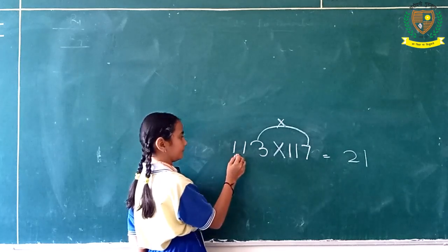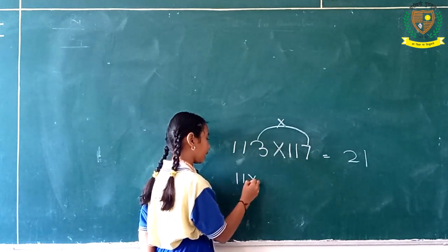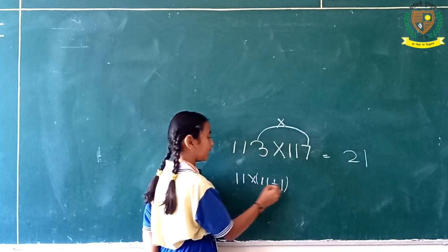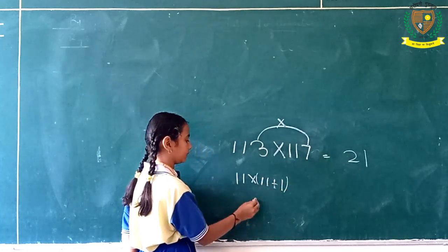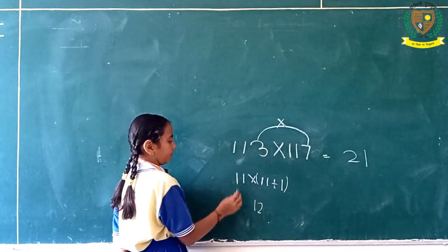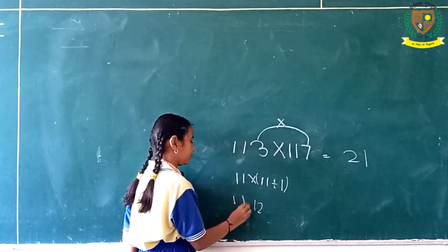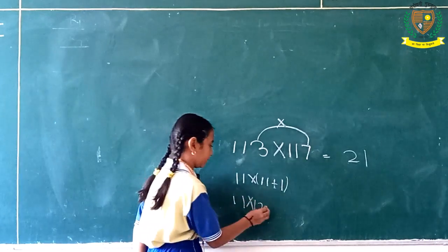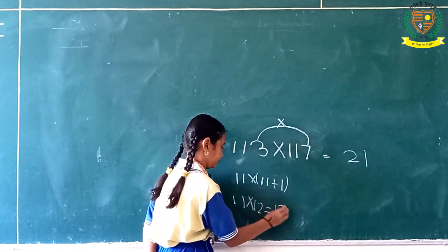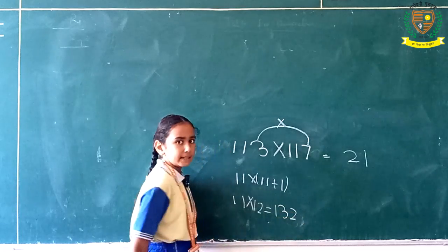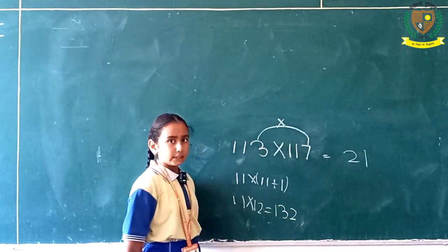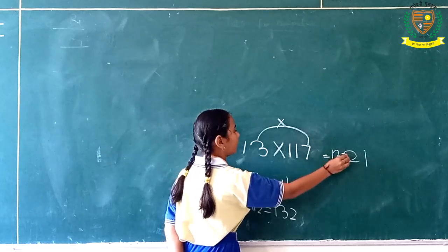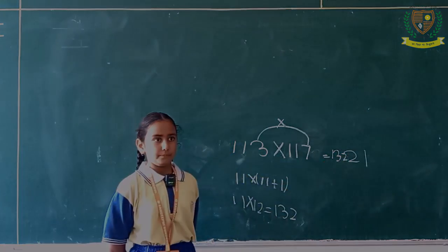After that, we will multiply 11 with 11 plus 1. 11 plus 1 equals 12, multiplied with 11. 11 multiplied by 12 equals 132. Our answer is thirteen thousand two hundred twenty-one. Thank you.